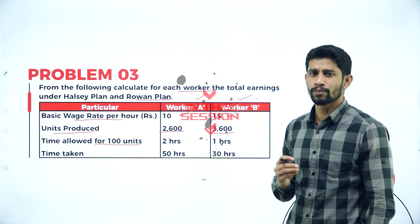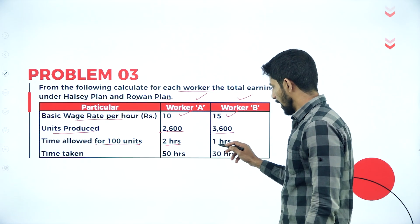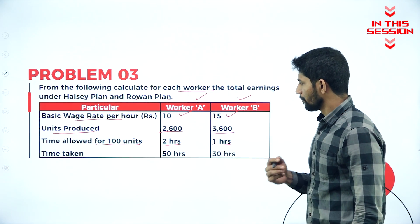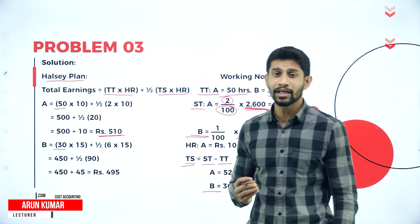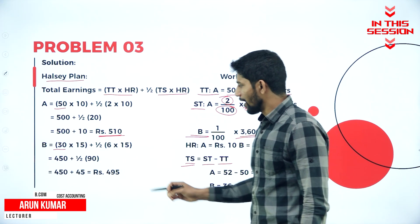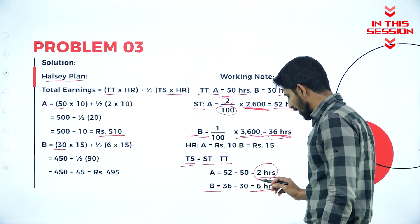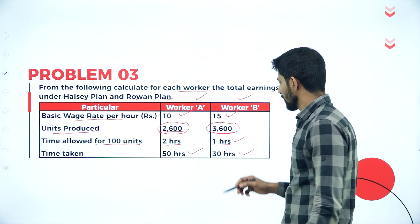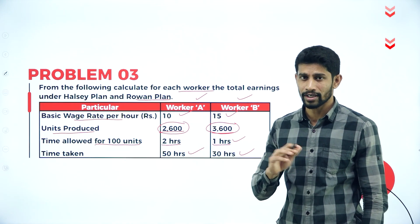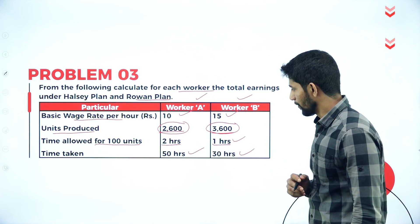The standard time given to produce 100 units is 2 hours for worker A and 1 hour for worker B. Time taken is 30 hours into 15 rupees per hour, plus half of time saved, which is 6 hours by Mr. B. The standard time to produce 2600 units and 3600 units is not given — we are supposed to find out the standard time, then only we can solve the problem.